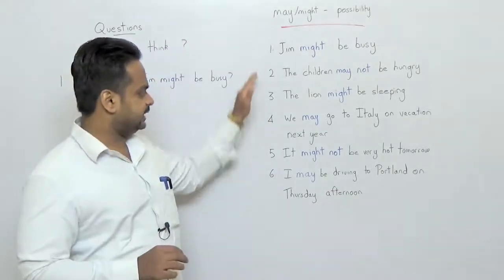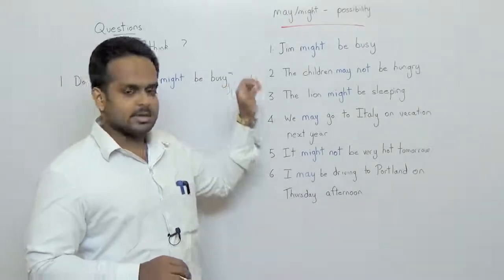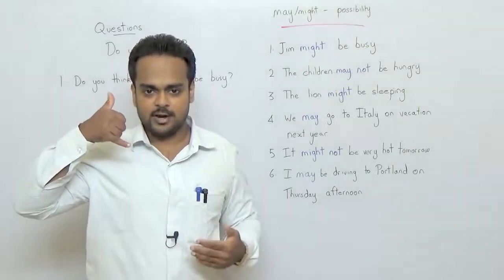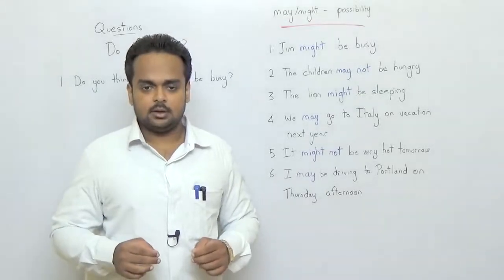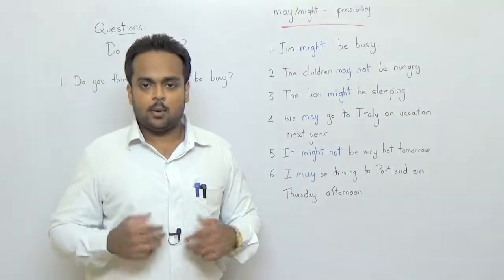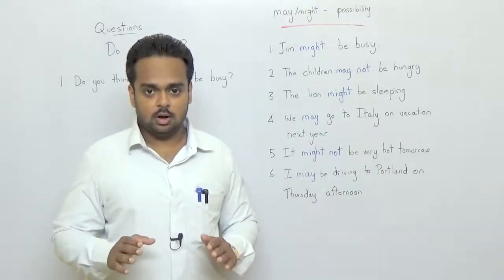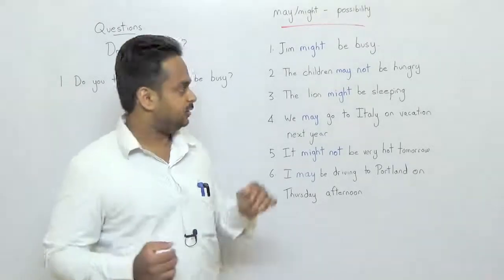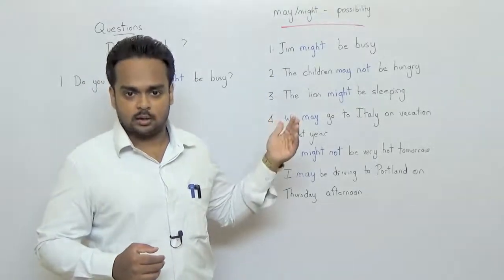Alright let's now talk about some examples. The first one is Jim might be busy. So imagine I'm trying to call my friend Jim and the phone rings and keeps ringing but nobody answers the phone and I think Jim might be busy. Maybe that's why he's not answering the phone. Now when I say that I'm not sure, I'm just guessing. If I'm sure I would say Jim is busy, but I don't know that. So to guess I'm saying Jim might be busy. Of course you can use may as well. Jim may be busy.